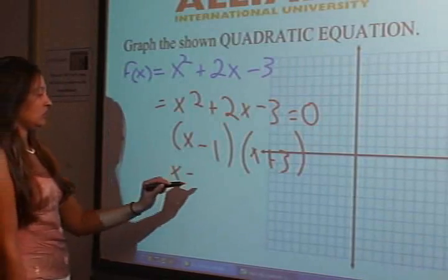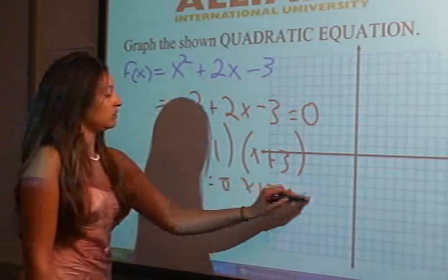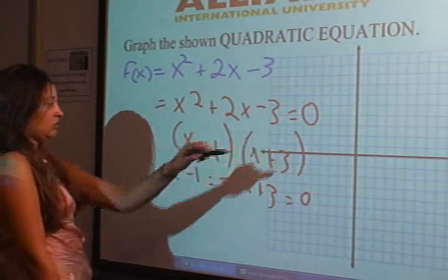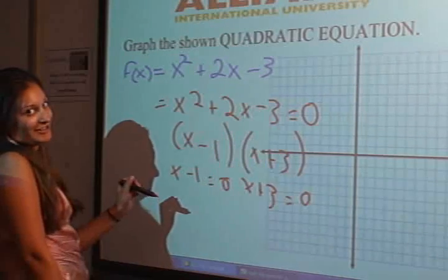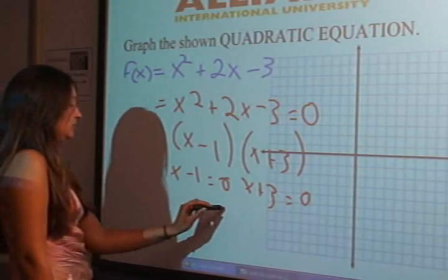Let's set each factor equal to 0. The x-coordinates are going to be at positive 1 and negative 3.